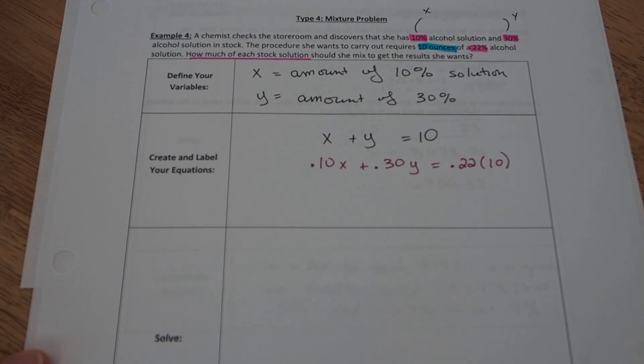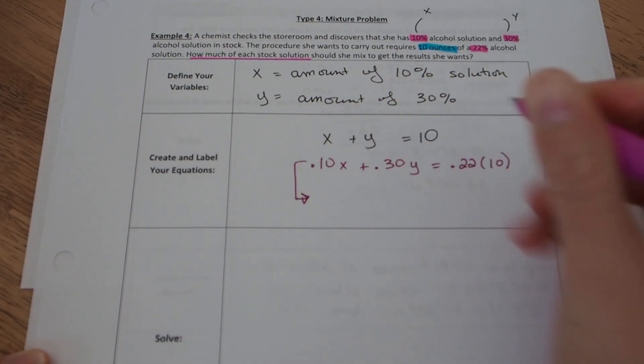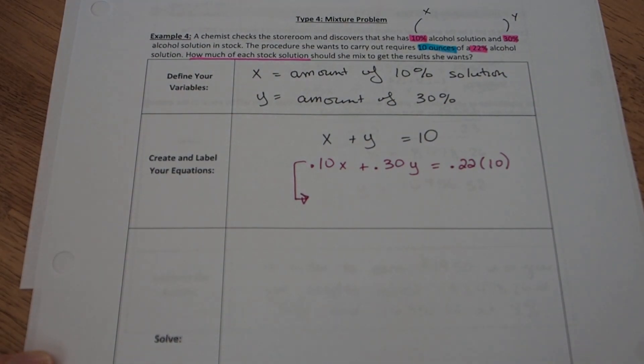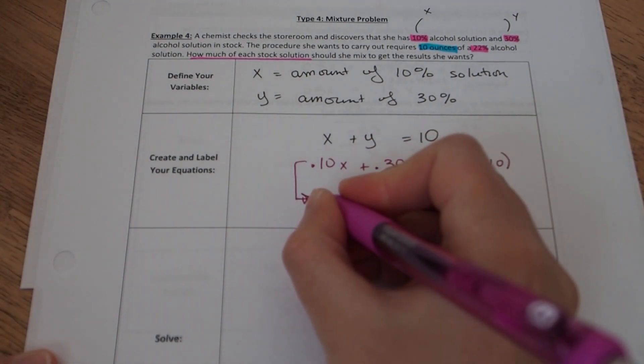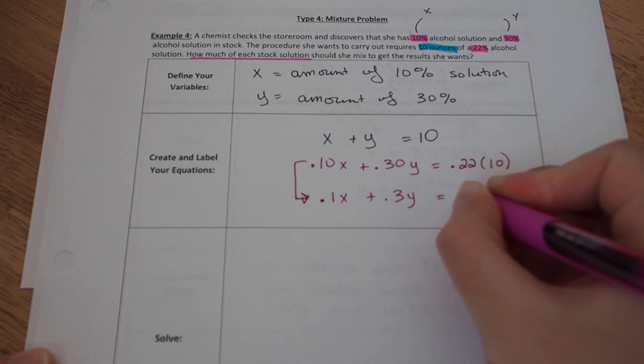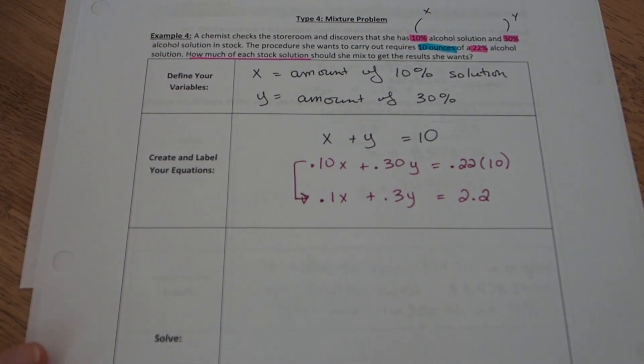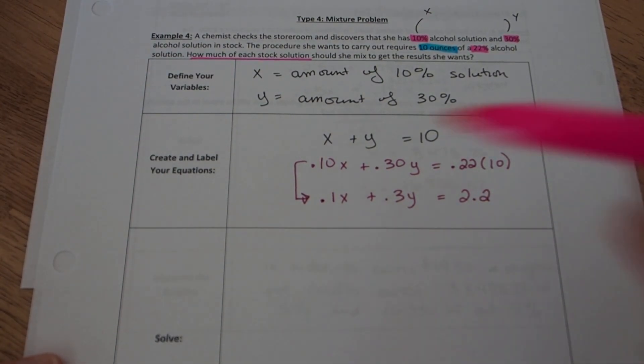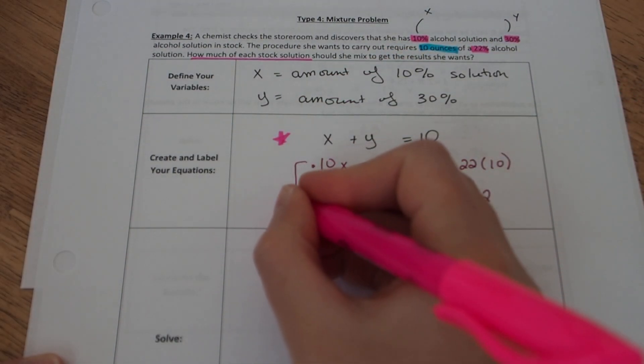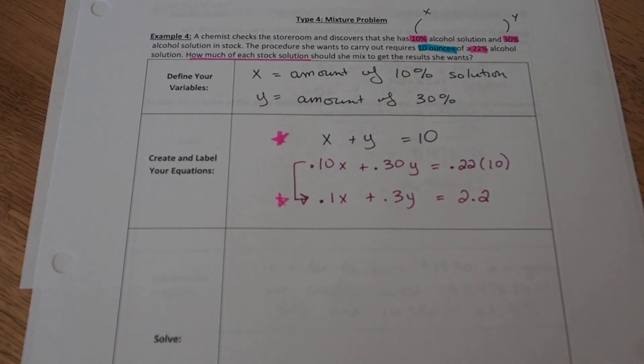So let's just simplify this equation real quick because I can do 22% times 10. I can drop those trailing zeros. So this equation simplifies to 0.1x plus 0.3y equals 2.2. 10 times 0.22 is 2.2. So now the two equations that I need to work with are x plus y equals 10 and 0.1x plus 0.3y equals 2.2.